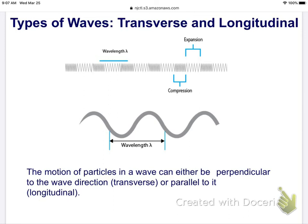Types of waves. There's two types of waves: transverse waves and longitudinal waves. The motion of particles can either be perpendicular to the wave. That's transverse.